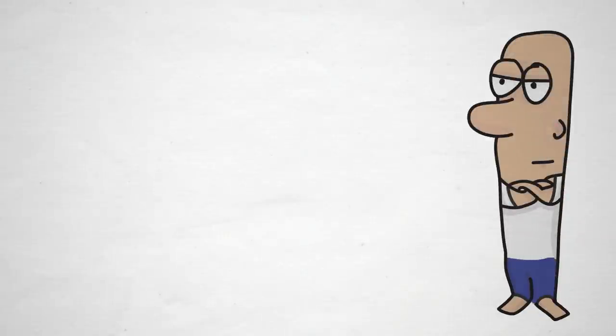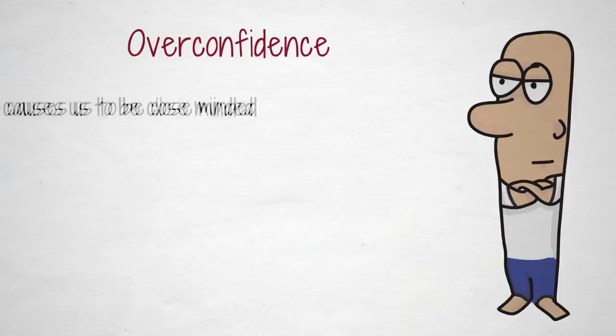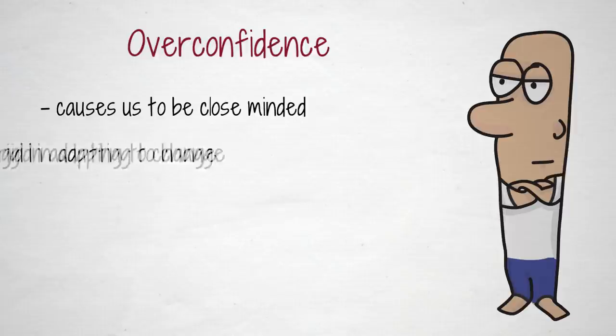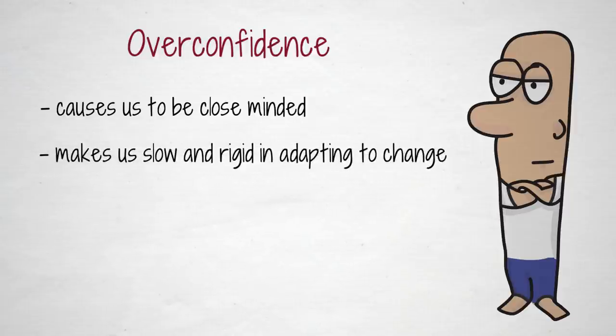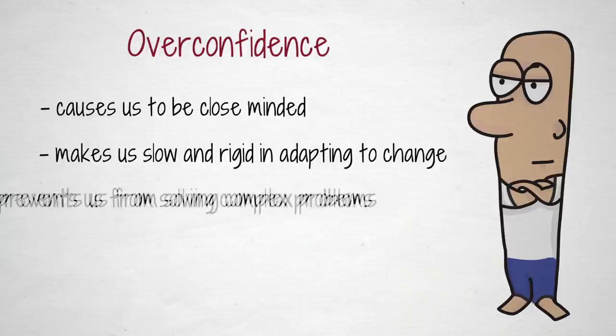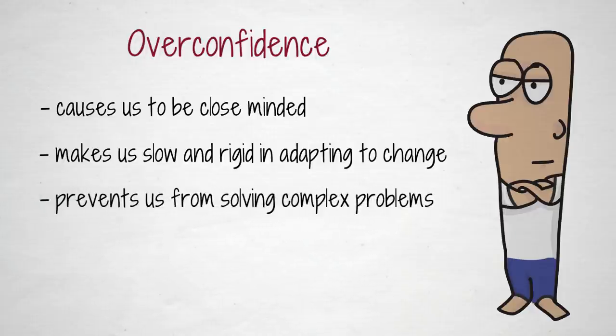Smart people make stupid decisions because they struggle with the same challenge that we all do — overconfidence. Overconfidence causes us to be close-minded towards different ideas than us. It makes us slow and rigid in adapting to change. It prevents us from solving complex problems and dealing with uncertainty with confidence.